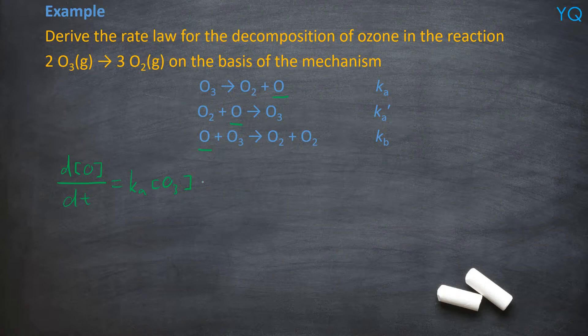Right, second step, you lose oxygen atom. So minus Ka prime O2, O. Okay, in the third step, you also lose oxygen atom. So minus Kb, O, O3.